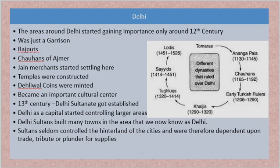The areas around Delhi were not very important places of administration or commerce before, though the Indo-Gangetic plain was very fertile. Delhi itself was just a garrison for a long time. There were warriors called Rajputs working for the Chauhans of Ajmer — fearful fighters, somewhat equivalent to the knights of the Crusade period. Then Jain merchants started settling around Delhi, trade flourished, and prosperity grew. Later, the Delhi coins were also minted out of Delhi.